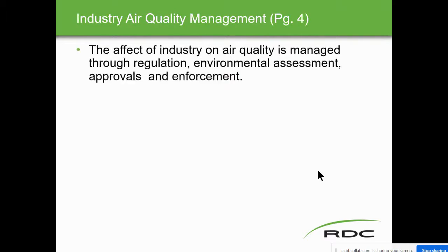Industry air quality management: the effect of industry on air quality is managed through regulation, environmental assessment, approvals, and enforcement. This management is done by the Canadian government and the Alberta government — and that's what Part B covers: regulation, environmental assessment, and enforcement. ILM 310404CB, environmental management, talks about that. We'll be going through that in the next ILM.